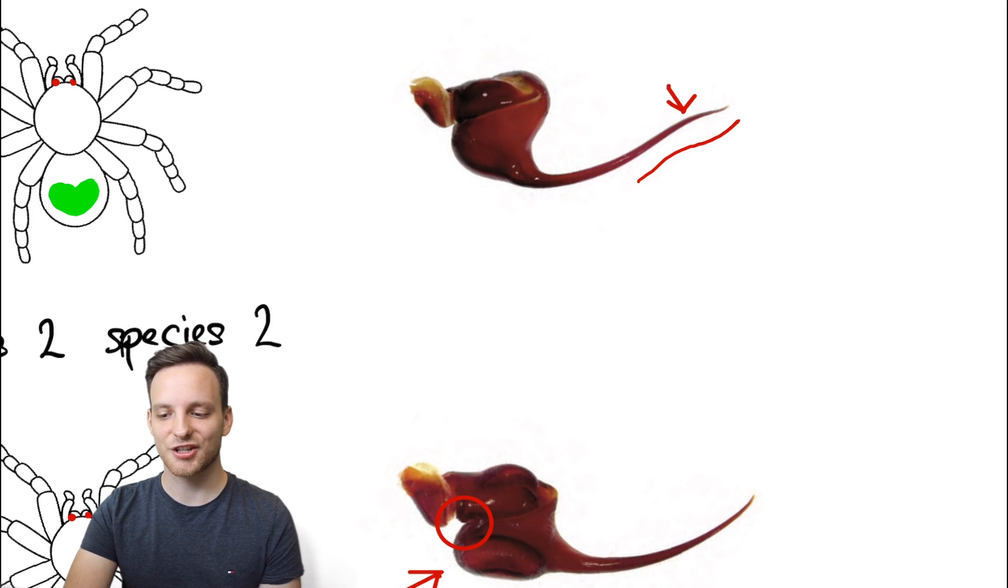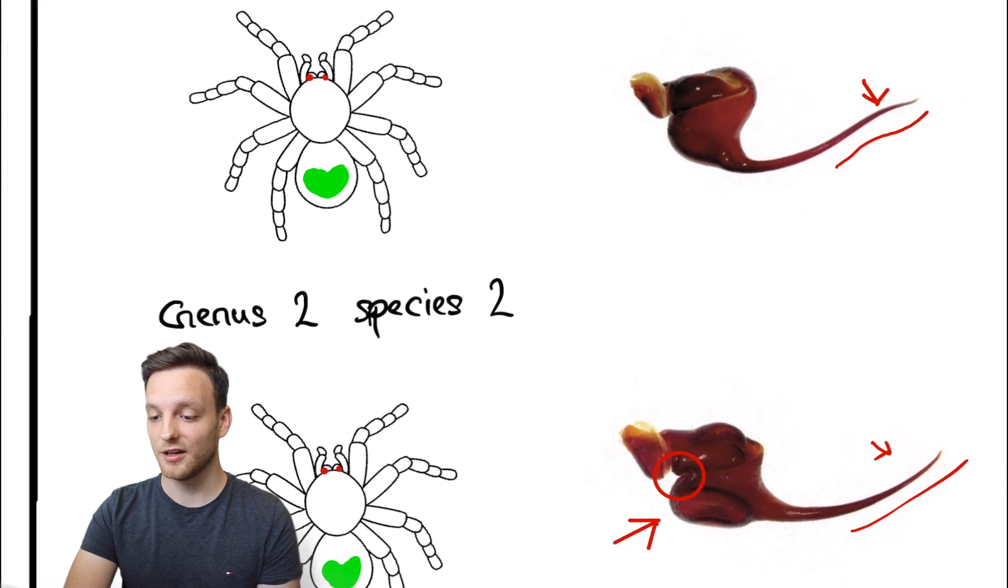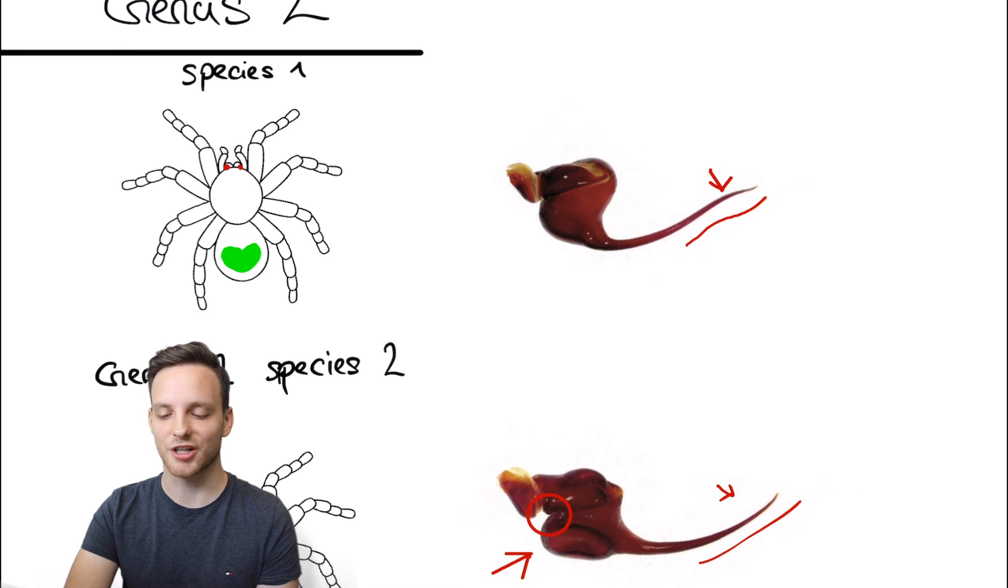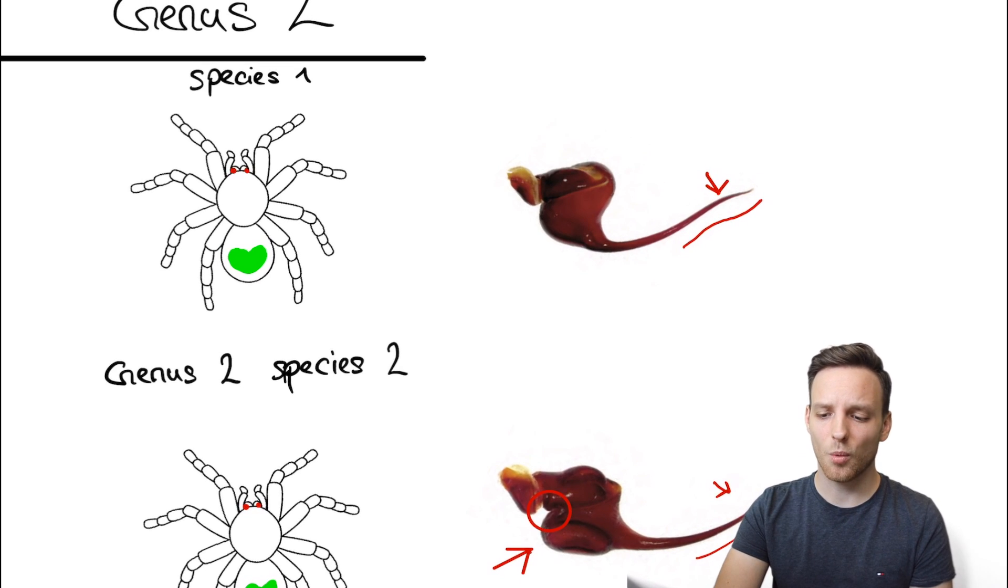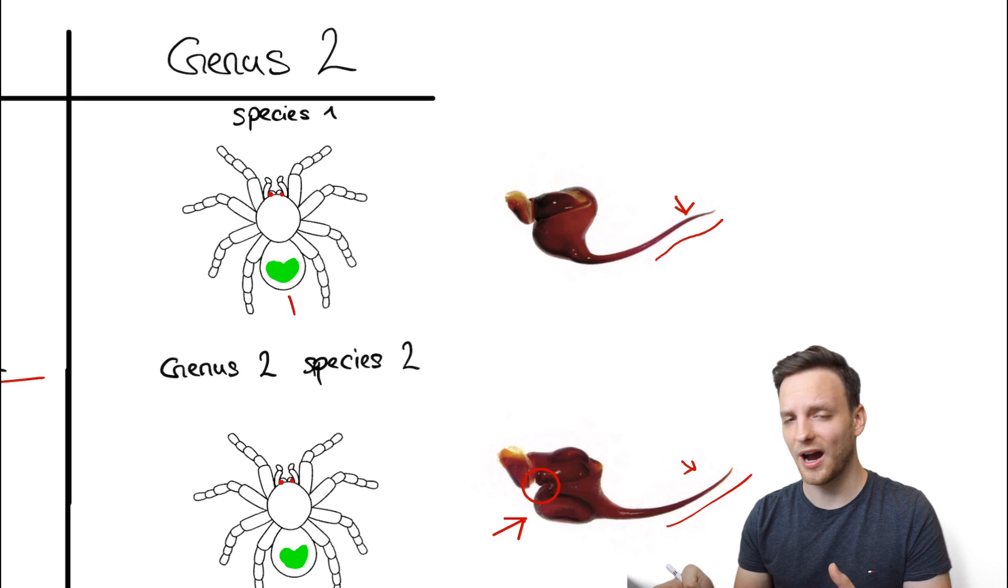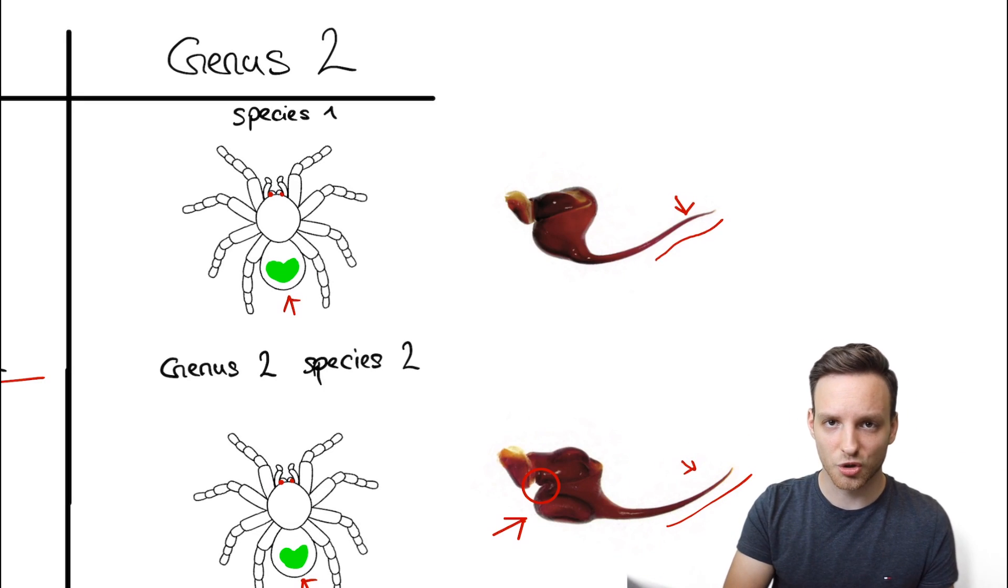This actually separates species from each other but they're still in the very same genus because they share the same morphological traits which is establishing or defining this genus. I hope it is somewhat clear now how or why there are different genera out there. For example Haplopelma, Cyriopagopus, Ornithoctonus.